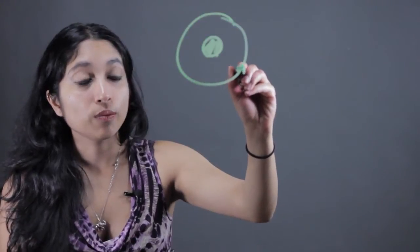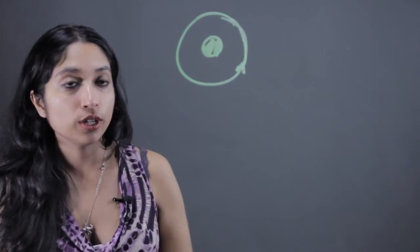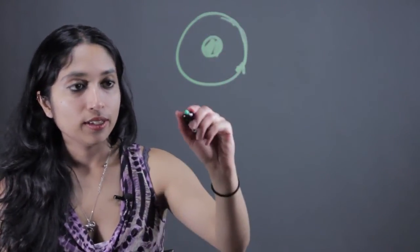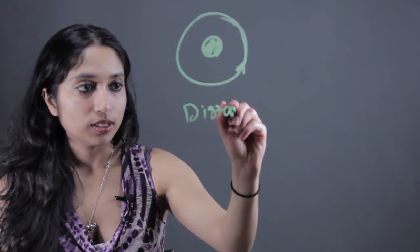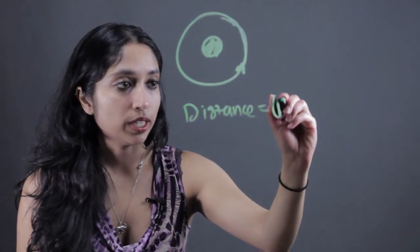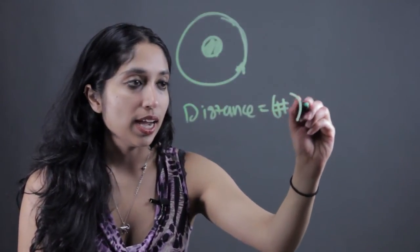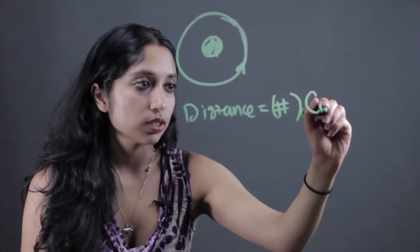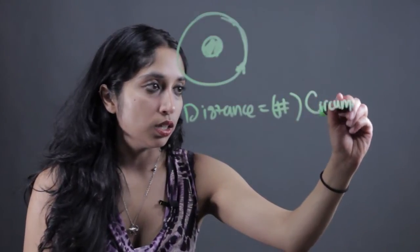We do need the circumference of that wheel though. And the reason for that is because the distance can be written as distance equals the number of rotations the tire makes times the circumference of that tire.